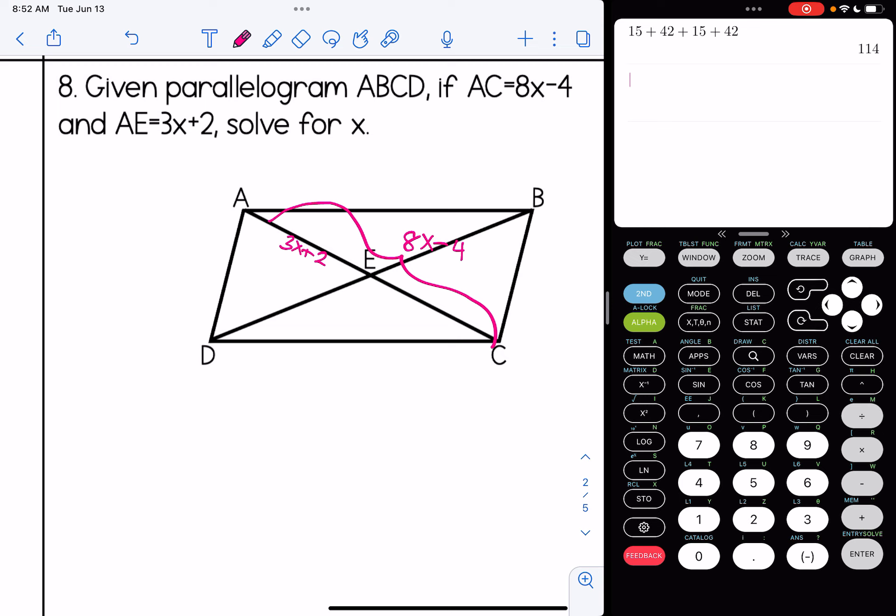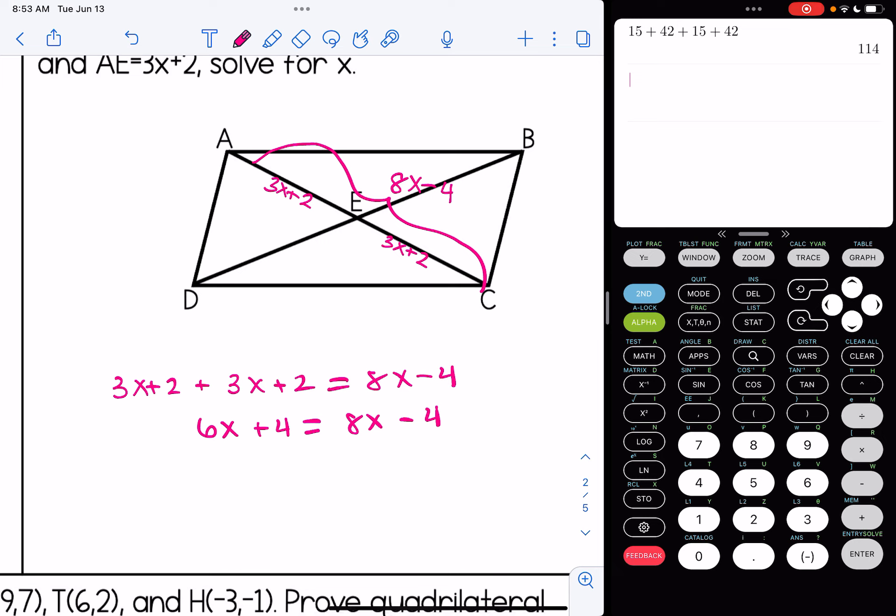And if we know the sum is 8X minus 4, based on this picture alone, we could do 3X plus 2 plus 3X plus 2 equals 8X minus 4. Let's combine our like terms. And we're going to try and isolate our variable. So let's move the X to the other side by subtracting 6X on both sides. I'm going to add the 4 to the other side. And I get that X is 4.